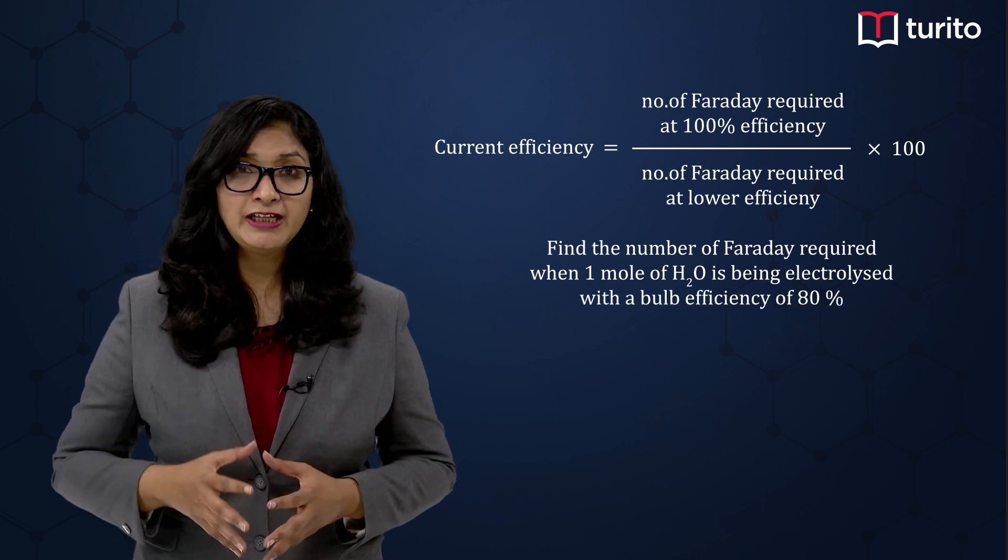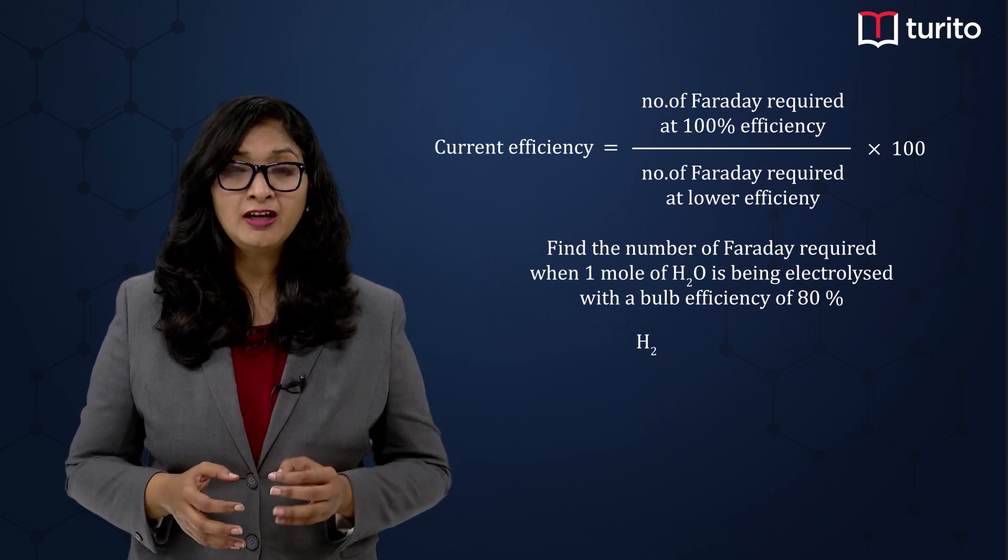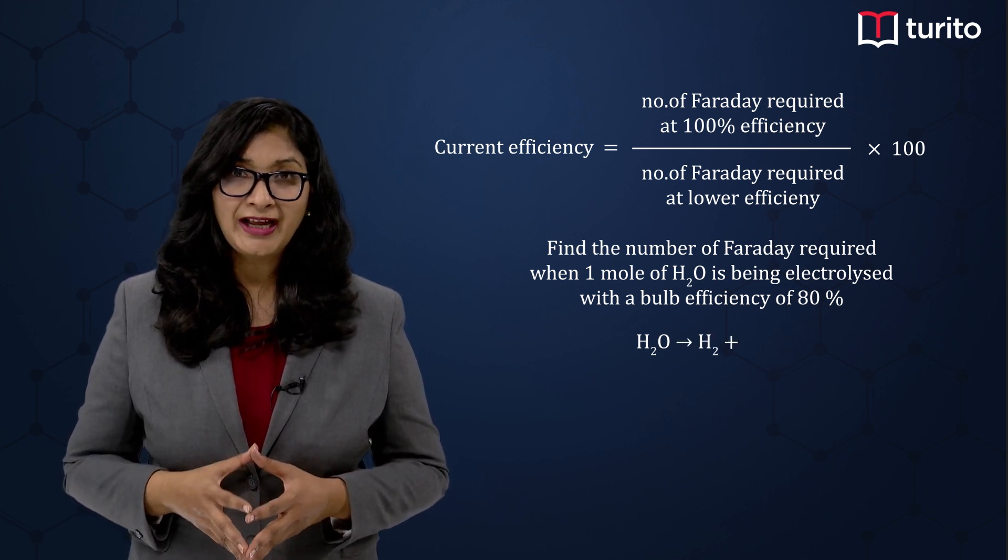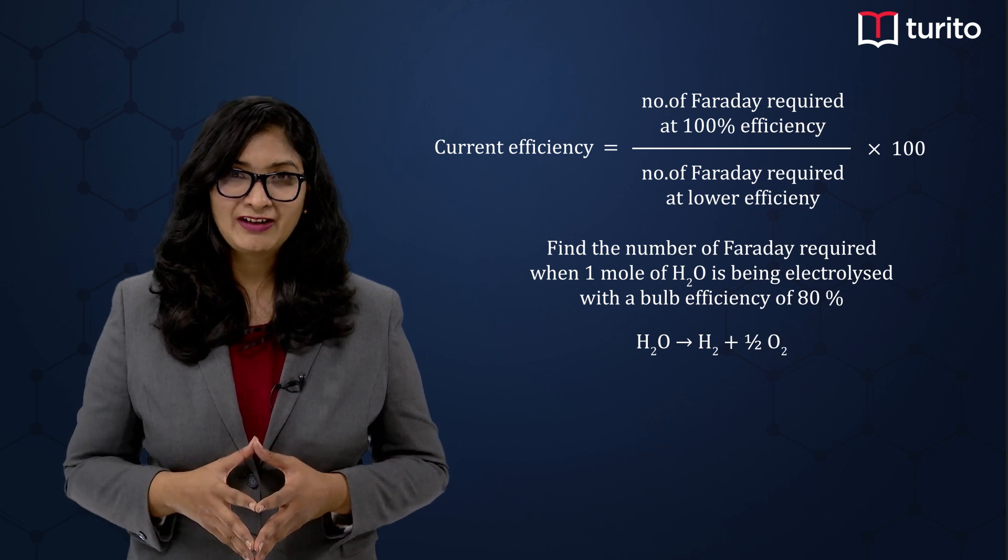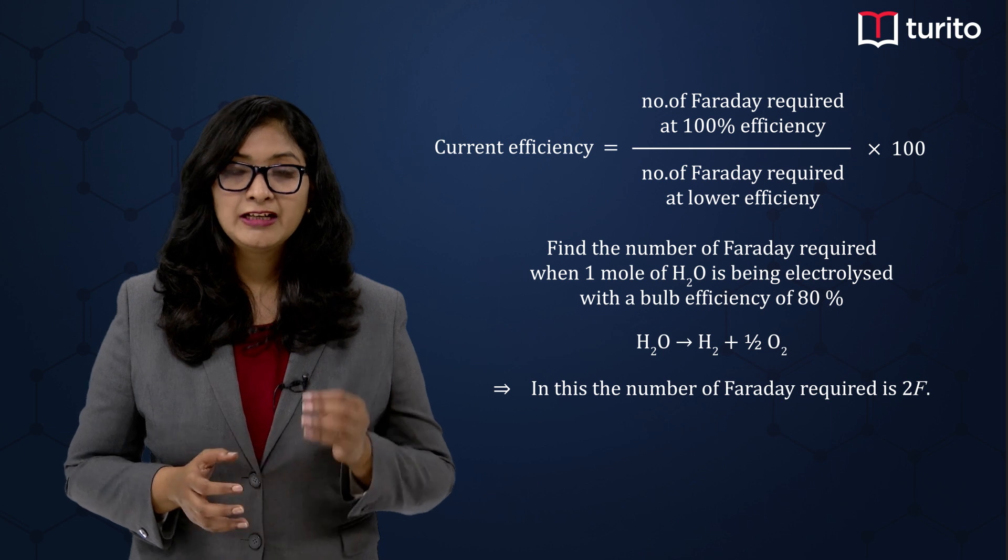As you already know, water on electrolysis produces one mole of H2 gas and half a mole of O2 gas, right? And in this it uses two Faraday. Now let us solve this question and find out the number of Faraday which is utilized at 80% efficiency.